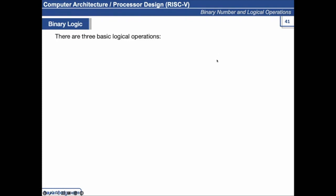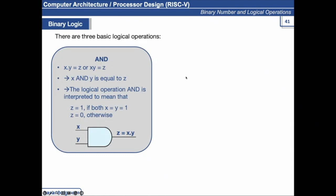So the three basic logical operations. One is AND. The AND operation is simply when if we talk about the two input AND gate, then the output is one or output is true only when both the inputs are one. It's usually represented with a dot sign xy equals z or xy simply z. Or we can sometimes also write x AND y equals z. The logical operation AND is interpreted to mean that z equals one if both x and y are one, otherwise it is zero. It is sometimes represented with the product sign x dot y.